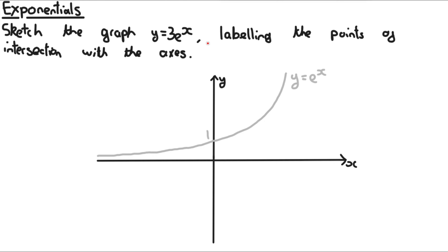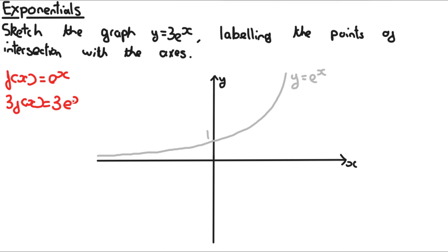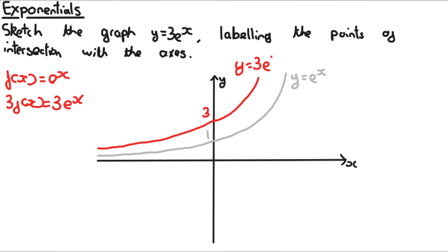They could ask you to transform exponentials. For example, sketch the graph y equals 3e to the power of x. As discussed in the transformations chapter, it's always good to first sketch the untransformed graph, which is y equals e to the power of x. Then 3e to the power of x is 3f(x), which is a stretch in the y-direction by a factor of 3. The y-intercept, which was 1, becomes 3 times bigger, so the new y-intercept is 3.